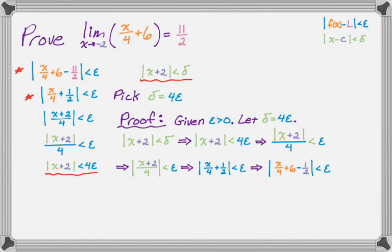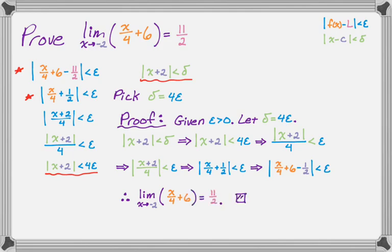We've shown the absolute value of f(x) minus L is less than epsilon given that delta equals 4 epsilon. That means for any epsilon you give me, I can figure out a delta, and if we're within that delta neighborhood, the absolute value of f(x) minus L is guaranteed to be in the epsilon neighborhood. Therefore, this is actually the limit — that's the whole point — and we're done.